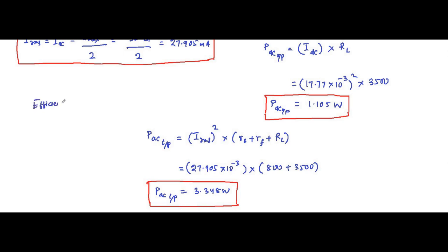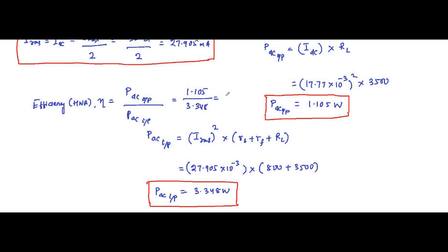Now we determine the efficiency of the rectifier. Efficiency equals P_dc output divided by P_ac input, which is 1.105 watts divided by 3.348 watts. This equals approximately 33 percent. It is usually around 40 percent, but in this case it is coming around 33 percent.